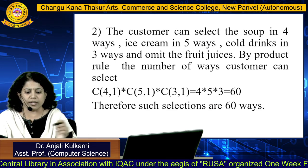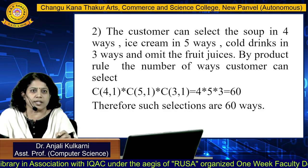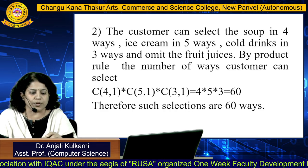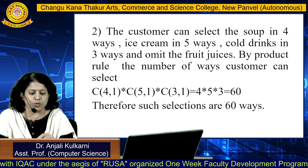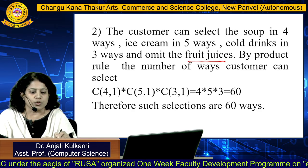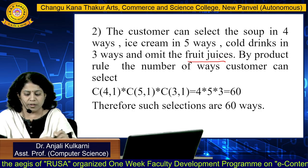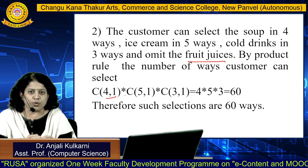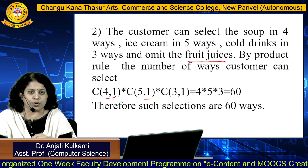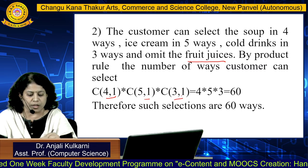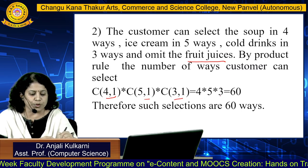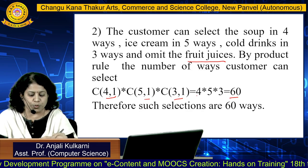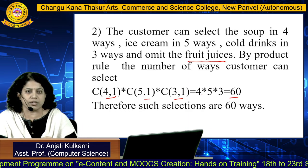For the second condition, the customer can select soup in 4 ways, ice cream in 5 ways, and cold drinks in 3 ways. Fruit juices are omitted. By the product rule: select 1 out of 4, select 1 out of 5, and select 1 out of 3, giving 4 × 5 × 3 = 60. Therefore such selections are 60 ways.